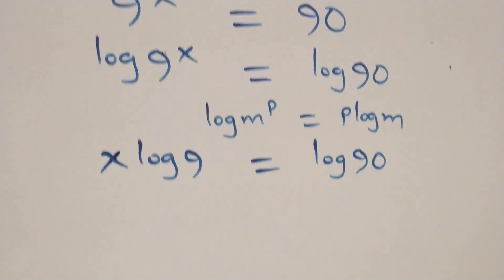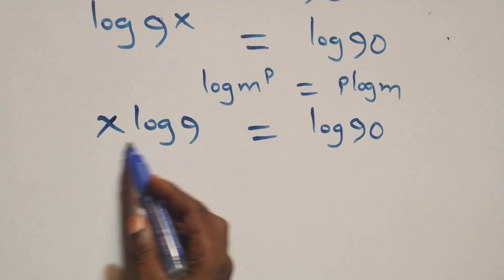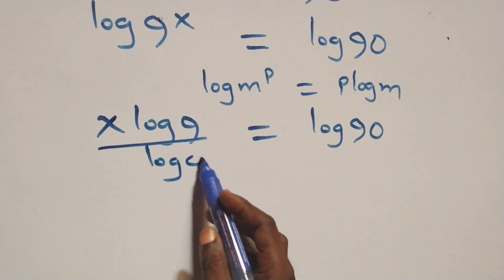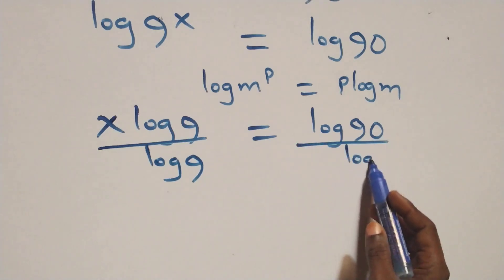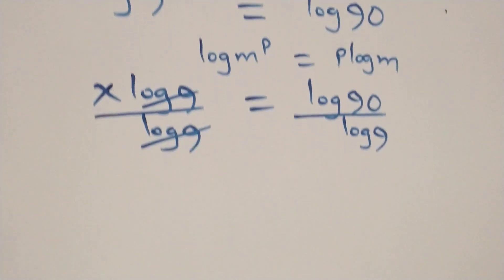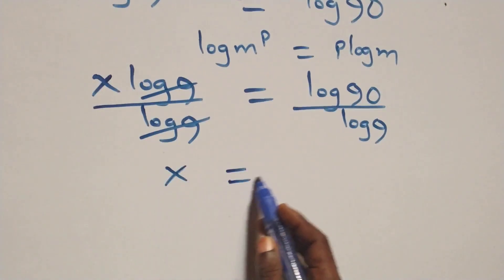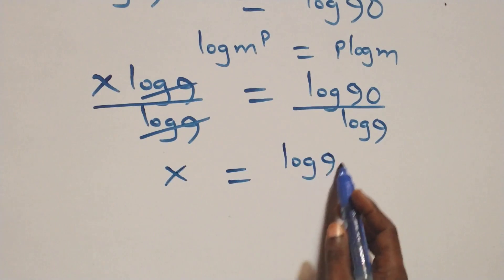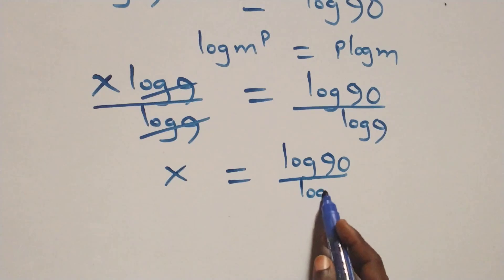The next step: we divide both sides by log 9. The log 9 terms cancel each other, and we are left with x equals log 90 over log 9.